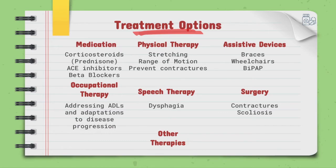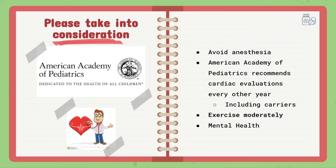Occupational therapists commonly address ADLs and how patients are going to adapt to disease progression. Speech therapy is very important for patients that struggle with swallowing; if severe enough, patients may be referred to gastroenterologists to address GI motility problems. Surgery is normally a last-line option for relieving contractures and scoliosis — one example is the tendon release procedure that treats ankle contractures for a person still able to walk. Some other therapies include gene therapy, exon skipping, and stem cell therapy. The most important thing to remember is that patients with BMD must avoid anesthesia, as it puts them at risk of death.